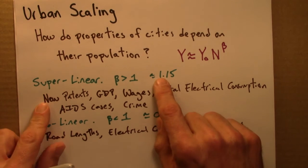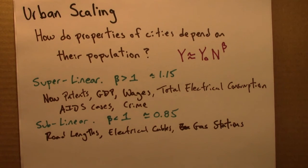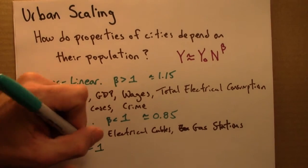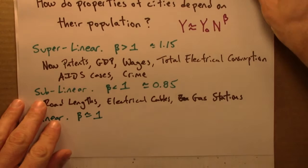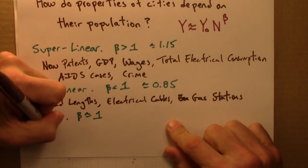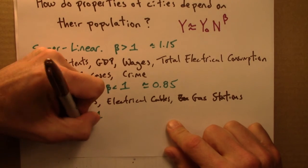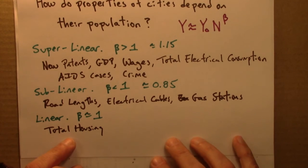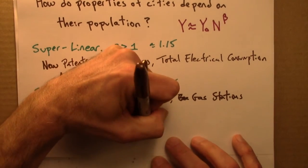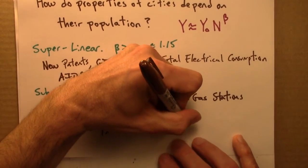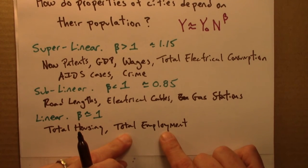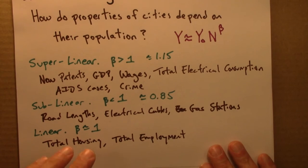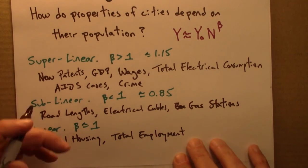So there tend to be some properties with an exponent of about 1.15, some around 0.85, and then some that are linear with a beta of around 1. Examples of linear quantities include total housing — not surprisingly, if you double the population you need to double the housing stock — and total employment. If you double the population size you double the number of jobs on average, though those jobs might pay more because wages go up faster than linearly.